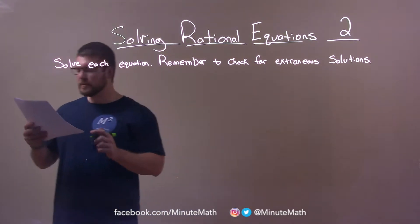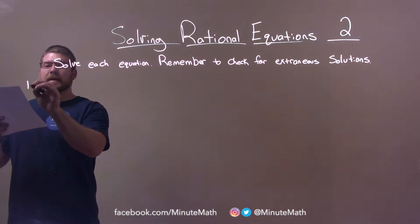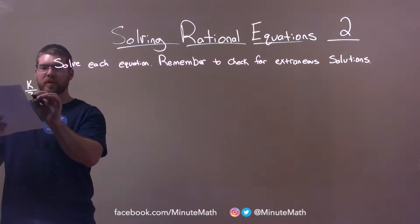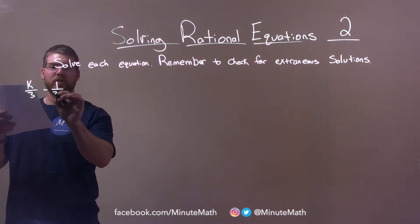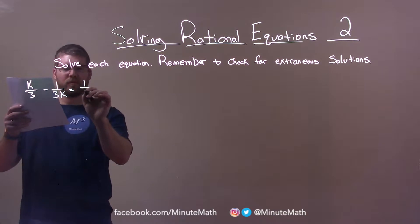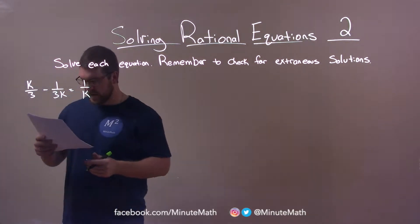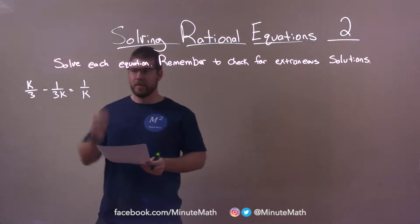So, if I was given this problem, k over 3 minus 1 over 3k is equal to 1 over k. Now, this one, I want to have all the denominators to be 3k.